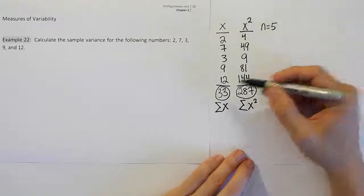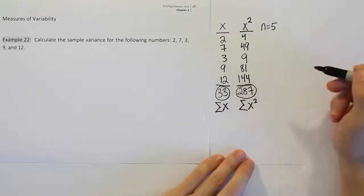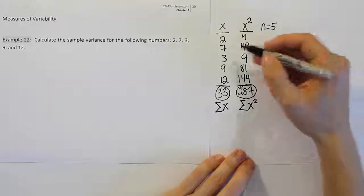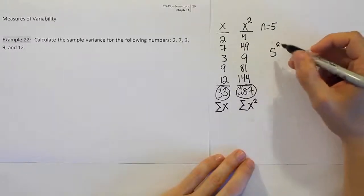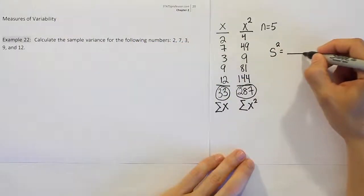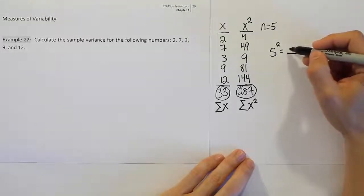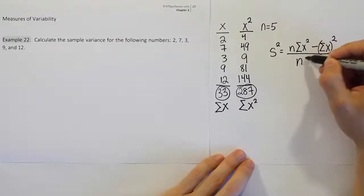Alright, now our kind of last set of steps that are the most important, really, is to take these numbers and plug them into our formula. The formula for variance is actually s squared if you're working with sample variance. And so this is the sample variance that asks us to calculate. And s squared has the following formula. It's a fraction. And basically, it's going to be n times the summation of x squared minus the summation of x quantity squared divided by n times n minus 1.